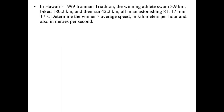Let's start with some one-dimensional motion problems. In Hawaii's 1999 Iron Man triathlon, the winning athlete swam 3.9 kilometers, biked 180.2, and then ran 42.2, all in eight hours, 17 minutes, and 17 seconds. Determine the winner's average speed in kilometers per hour and also meters per second.